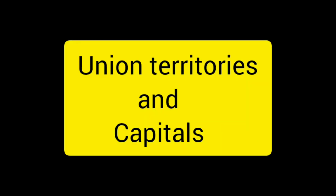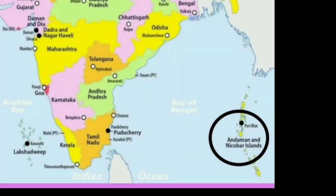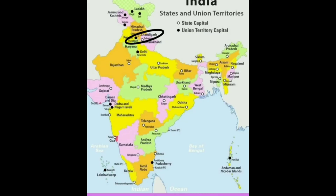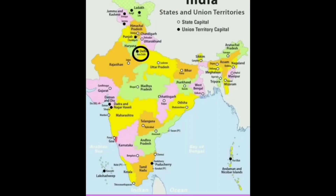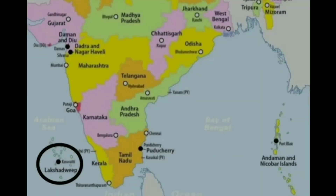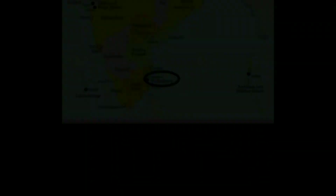Union Territories of India and their capitals: Andaman and Nicobar Islands — Port Blair. Chandigarh — Chandigarh. Dadra and Nagar Haveli and Daman and Diu — Daman. Delhi — New Delhi. Lakshadweep — Kavaratti. Puducherry — Puducherry.